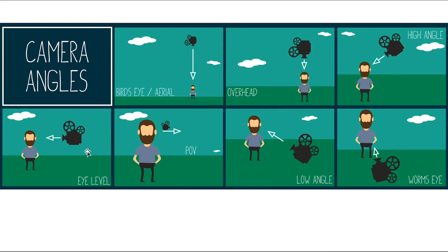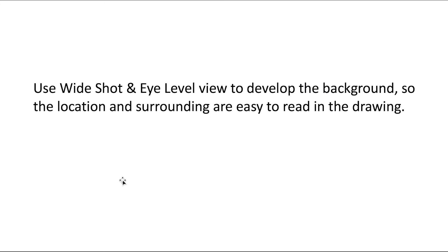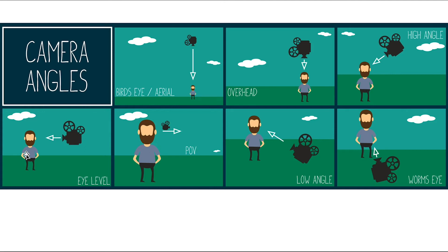First person view and low angle view are usually used to show the hero — if your main character is a superhero, you use this type of shot to show the character's presence. Worm's eye view is used to show a monster or a huge-scale character. When drawing the background and environment of your animation, we typically use the wide shot and eye level view — the wide shot includes the whole character's body and the environment, making the location and surroundings easy to read in the drawing.